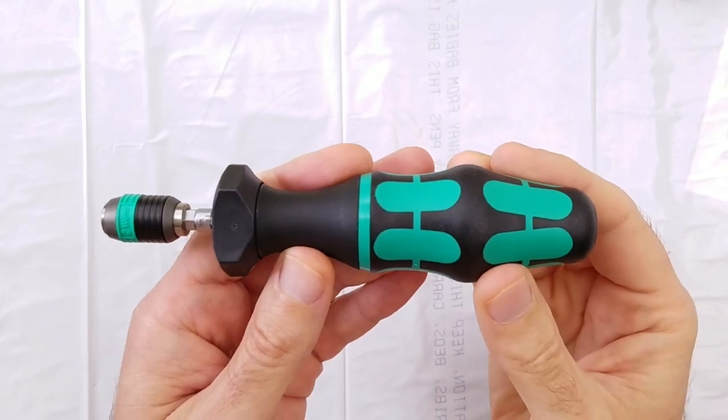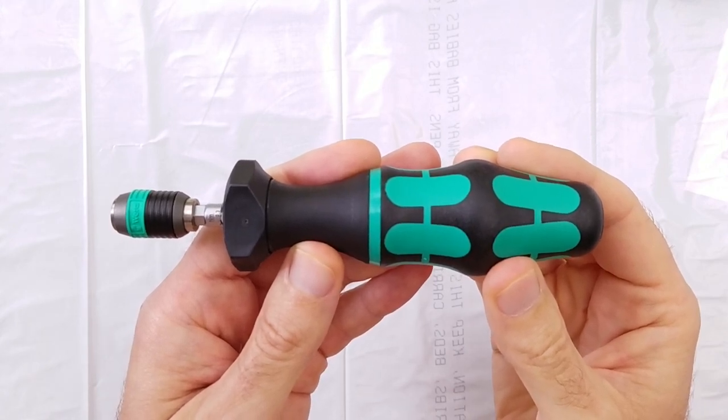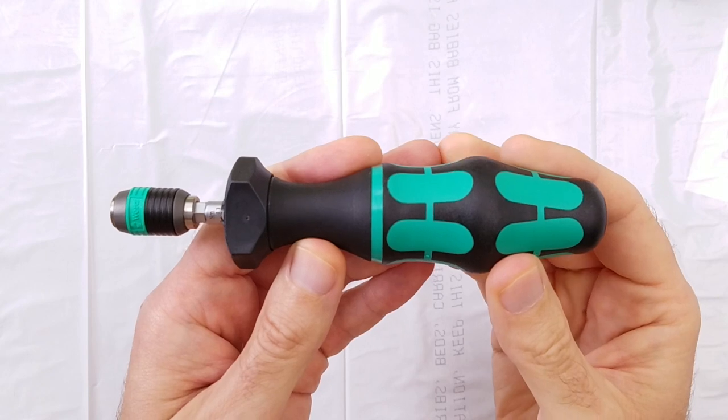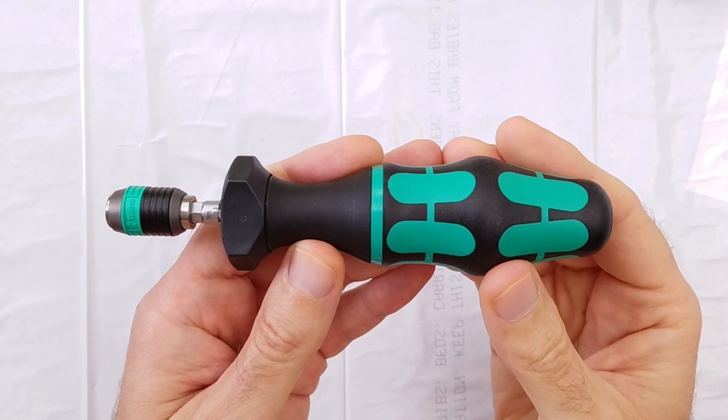The screwdriver only allows you to gauge torque in the tightening direction. It does not work in the reverse direction. Let me go over how to adjust the torque setting since it's not entirely obvious and the manual is lacking.